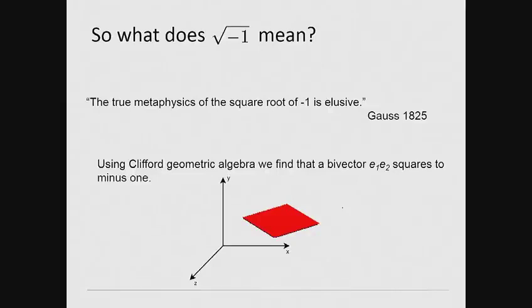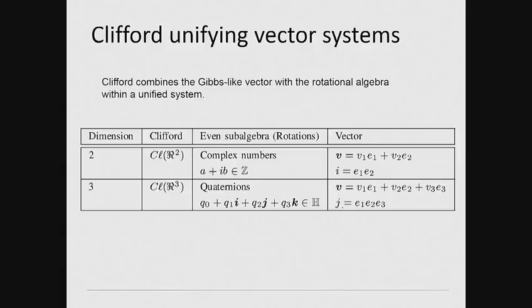Hence, Clifford provides a clear geometrical meaning of the unit imaginary as a unit area as shown. We have showed how complex numbers and quaternions describe the rotational algebra for two and three dimensional space and Clifford combines the Gibbs-like vectors with this rotational algebra in a unified system.